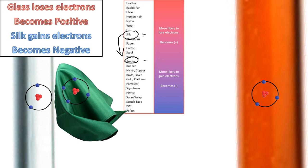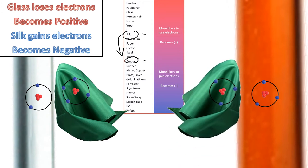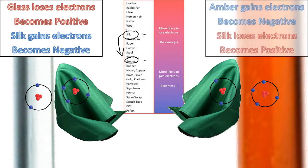As predicted, the silk gives up an electron to the amber, leaving the silk with a positive charge and the amber gains electrons, so it becomes negative. That is charging by friction — you always get one object becoming negatively charged and one object becoming positively charged.